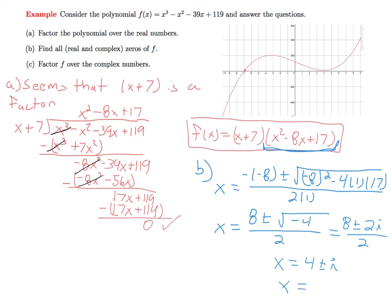We also had one real root that we found initially from the graph at minus 7. That concludes part b, and from these three zeros that we found,